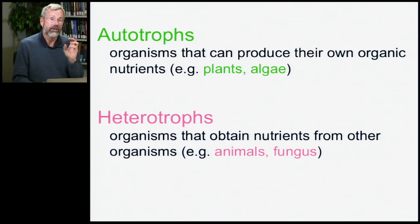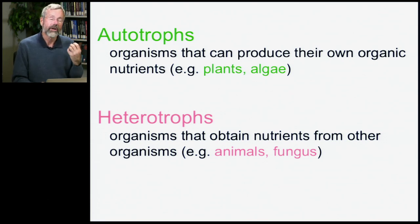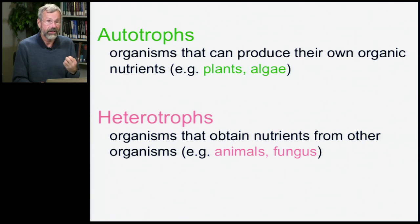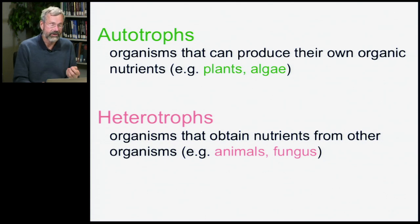Remember that there are two principal ways to earn a living out there. One is as an autotroph, whereby you produce your own organic nutrients through photosynthesis — that makes you a plant or an algae. Otherwise, you're a heterotroph: you have to obtain your nutrients from other organisms. You have to eat, like animals and fungus.